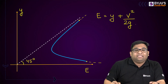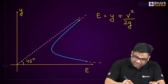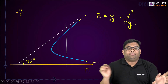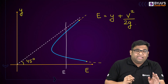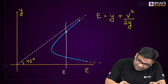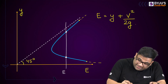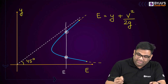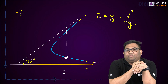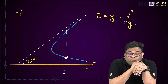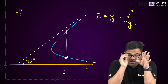The first observation is that for a particular specific energy, you can have two depths. So for a particular specific energy, there are two depths, and they are known as the alternate depth.